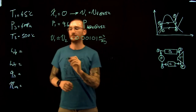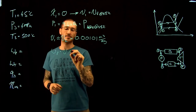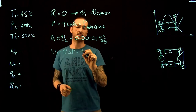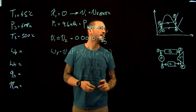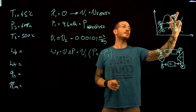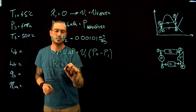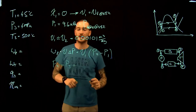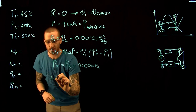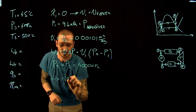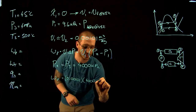The work of the pump for constant volume can be written as specific volume times the change in pressure — that is, specific volume at point one times (P₂ − P₁). From the T-S diagram, these are constant pressure lines, meaning P₂ = P₃ = 4 MPa = 4,000 kPa. So the work of the pump equals 0.00101 × (4,000 − 9.6).